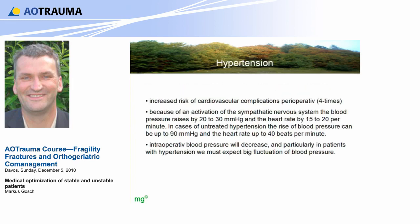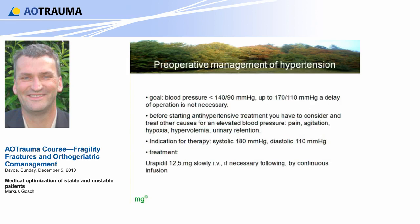Hypertension is also a big problem. The increased risk of cardiovascular complications is around four times. Induction of anesthesia activates the sympathetic nervous system and blood pressure rises by 20 to 30 mmHg and heart rate by 15 to 20; in patients with untreated hypertension it can rise up to 90 mmHg and heart rate up to 40. The goal is blood pressure lower than 140/90. Up to 170/110 mmHg a delay of the operation is not necessary. Act only if systolic is more than 180 and diastolic more than 110, and consider other causes like pain, agitation, hypoxemia, hypovolemia, and urinary retention. Treatment: urapidil 12.5 milligram intravenous slowly, repeated after 20 to 30 minutes.